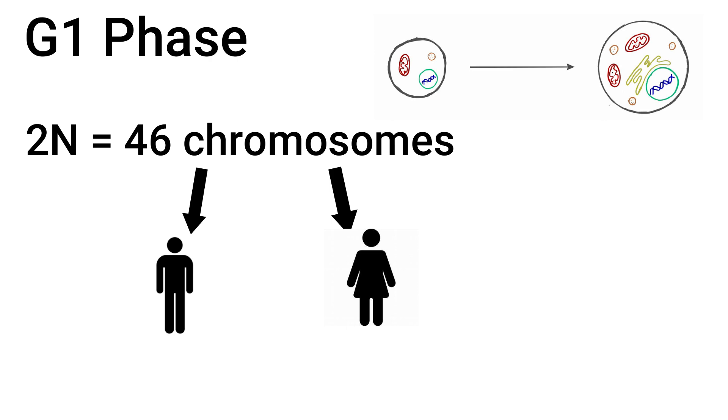The G1 phase is where the cell grows, so it makes various enzymes and nutrients. This is the stage of the cell where the cell produces the most proteins.